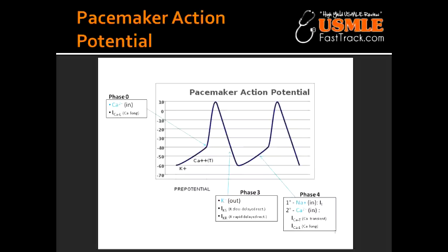Briefly describe the difference between pacemaker action potential and ventricular action potential. In pacemaker action potential, phase 0 is the upstroke that occurs due to voltage-gated calcium channels, whereas in ventricular action potential, phase 0 is the rapid upstroke due to sodium channel opening. In pacemaker action potential, there is no phase 1 and no phase 2, because there is no plateau. In phase 3, there is efflux of potassium in both ventricular and pacemaker action potential. In phase 4, there is slow diastolic depolarization in pacemaker action potential due to increased sodium conductance, which differs from phase 4 of the ventricular action potential, which is the resting potential.